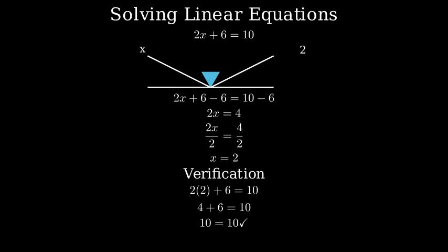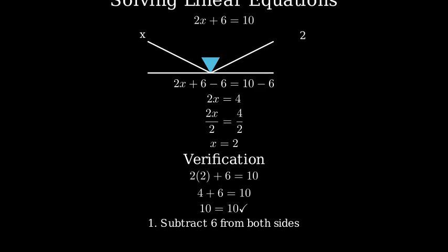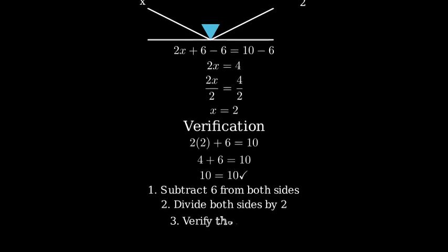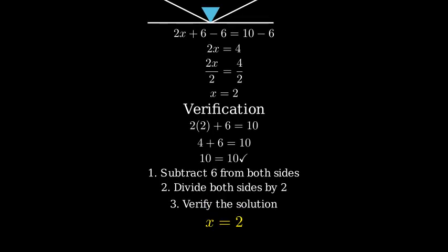So, we've solved the equation 2x plus 6 equals 10 by first subtracting 6 from both sides to get 2x equals 4, then dividing both sides by 2 to get x equals 2. And we've verified our answer is correct. Therefore, x equals 2 is our solution.